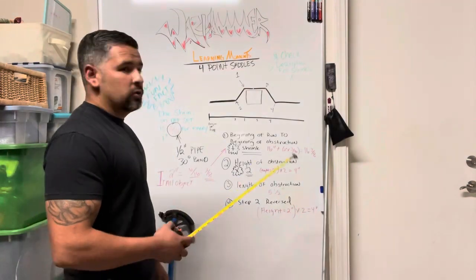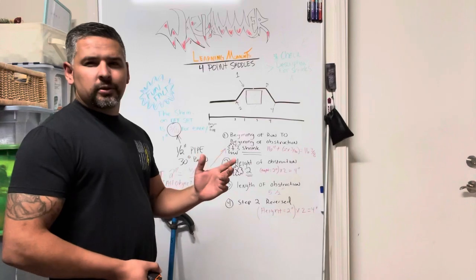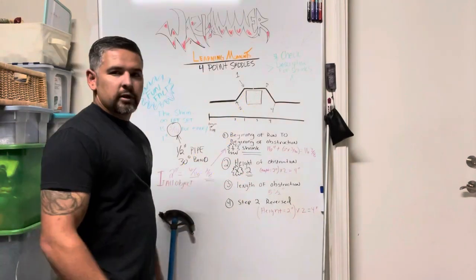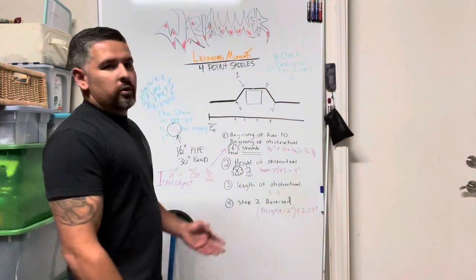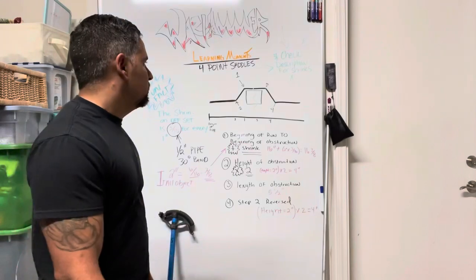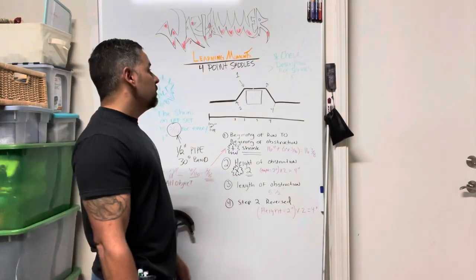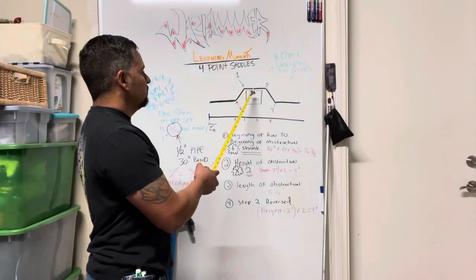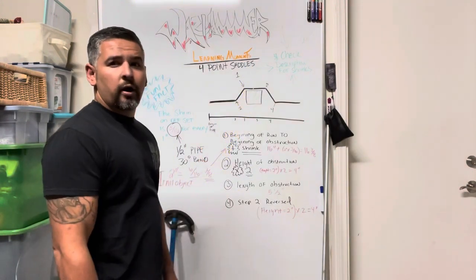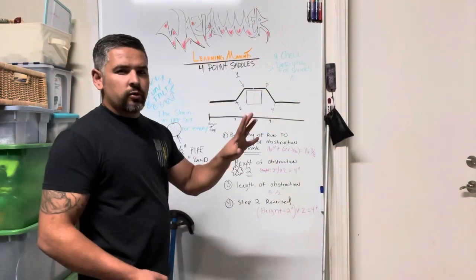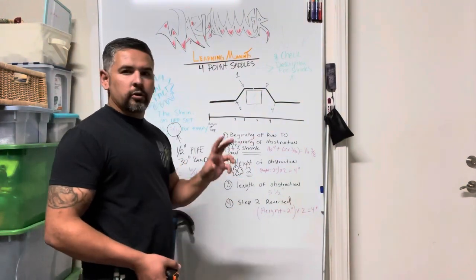So if you really break it up into what it really is, it's literally two offsets, right? Whether you do 30 degree, 45, or 10 degree, whatever you guys want. But in reality, it's literally just two offsets. That's how I'm going to throw this out there and we'll learn that process one by one.